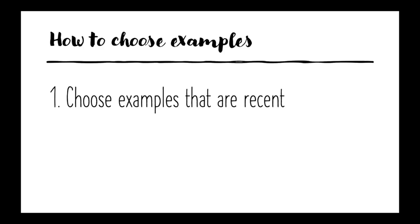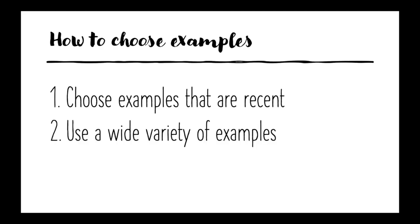Here are a few guidelines on choosing examples. The first is to choose examples that are as recent as possible, as historical examples tend either to be overused or outdated. Secondly, you should use a wide variety of examples from different geographies and countries. This shows the universality of the policy that you are arguing for.